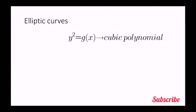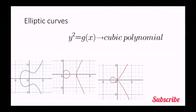Now let's talk about elliptic curves. These curves can be represented as y squared equals to g of x, where g of x is a cubic polynomial. Now if we plot the graph of this equation, we get four different types of plots.